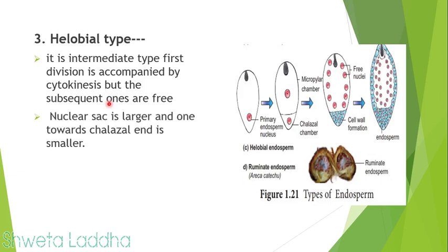Helobial type occurs in the case of spadix. Ruminate endosperm — where the endosperm remains with the seed — is seen in areka katechu (supari), and it is formed by the nuclear type, the first type.